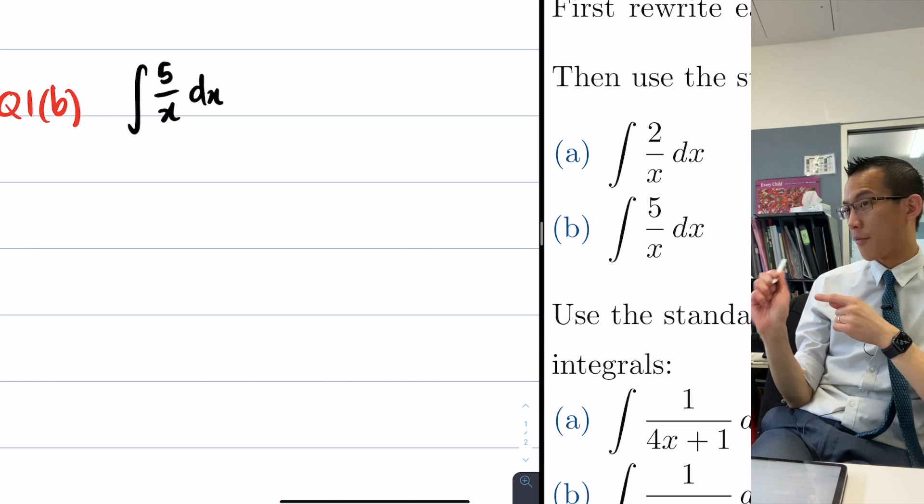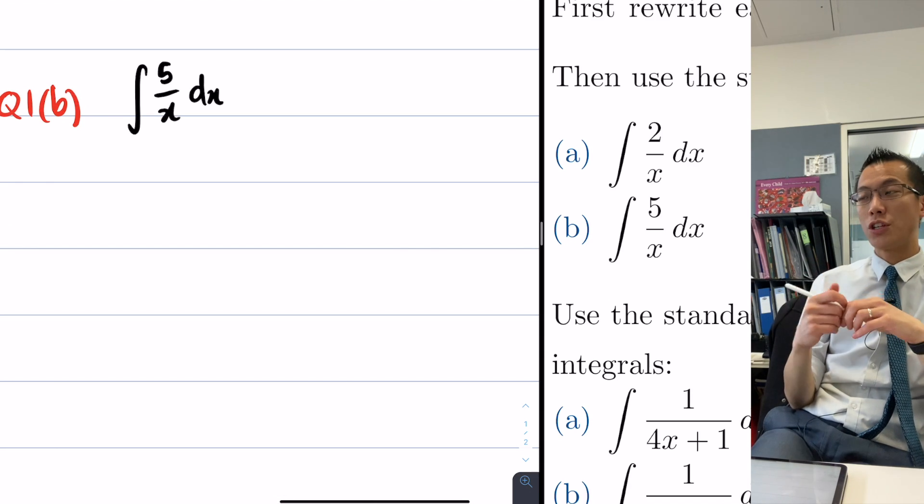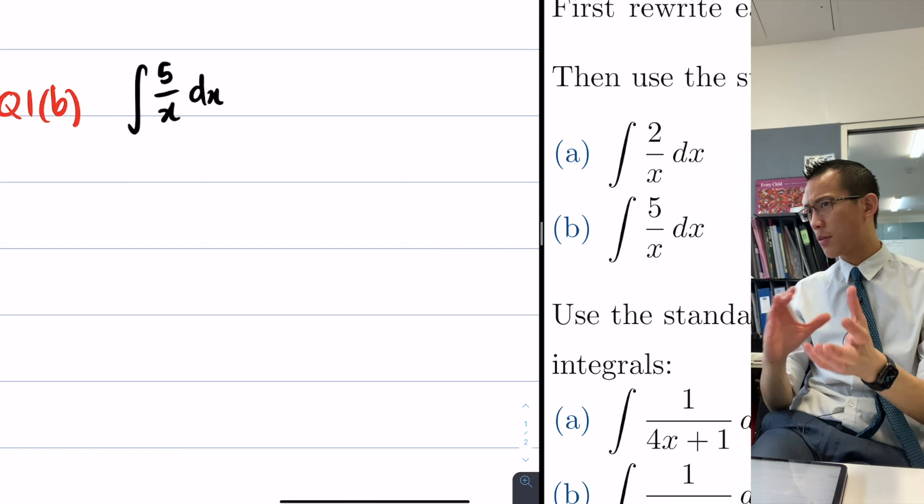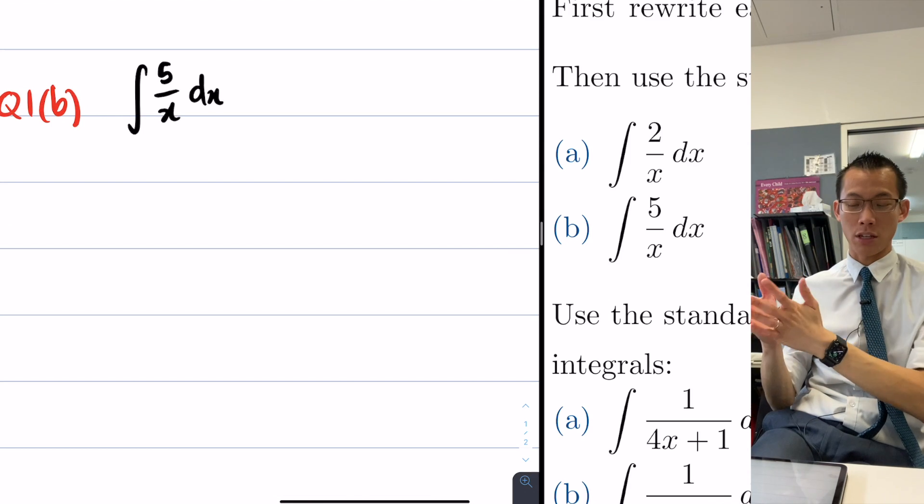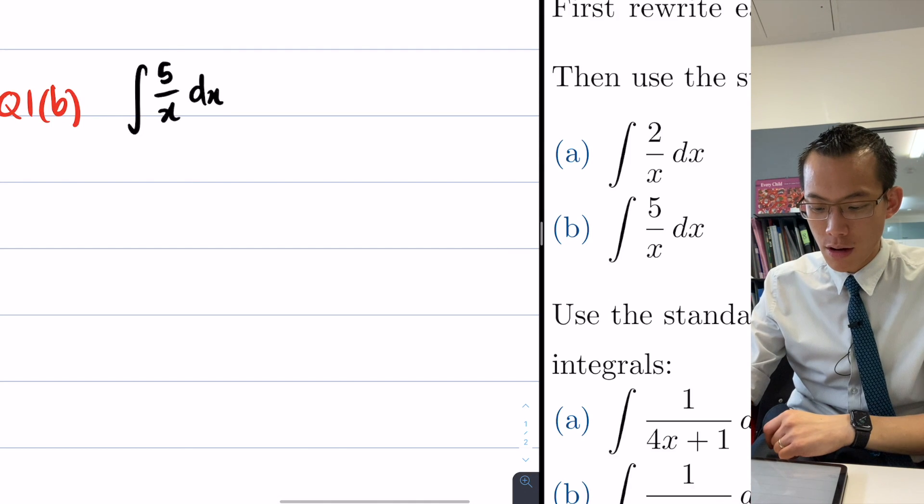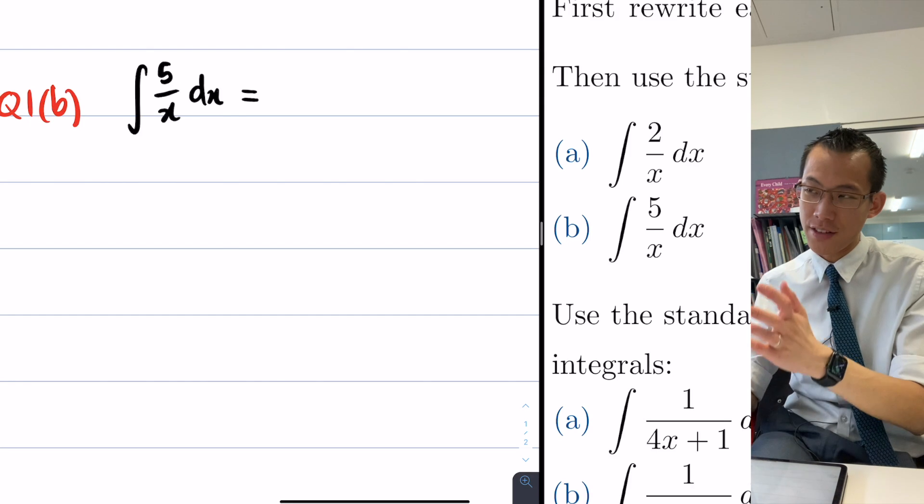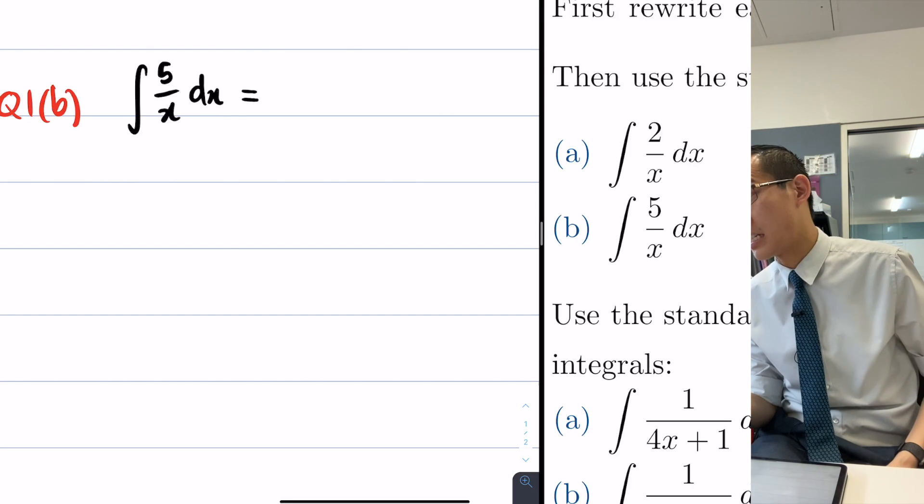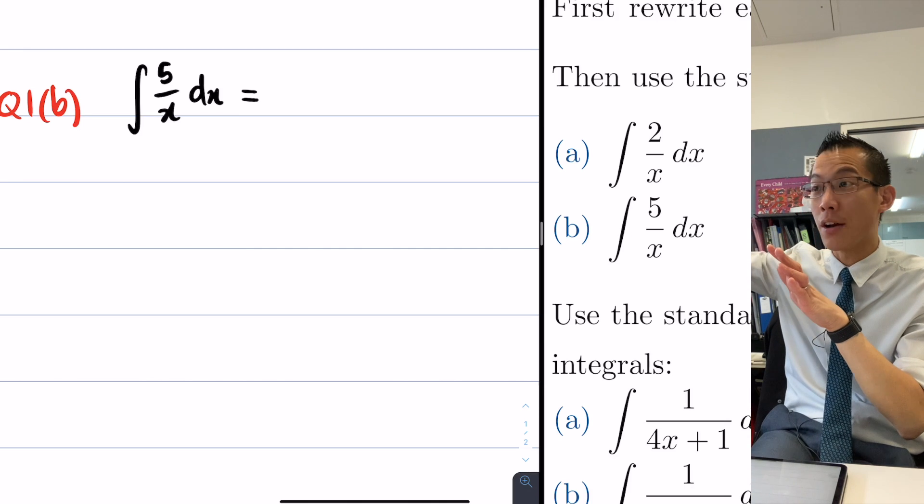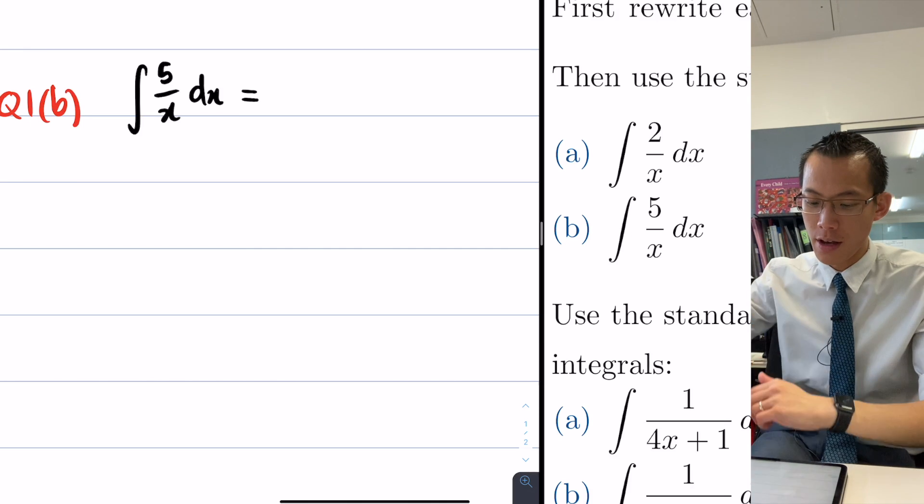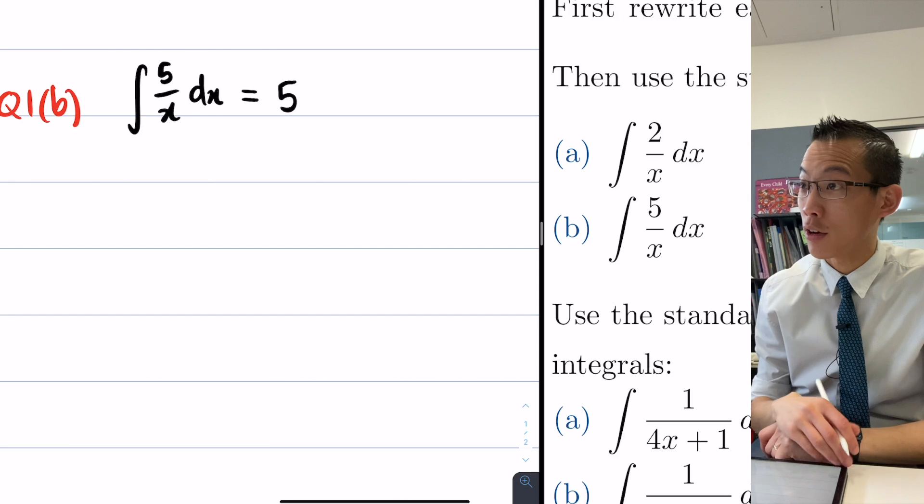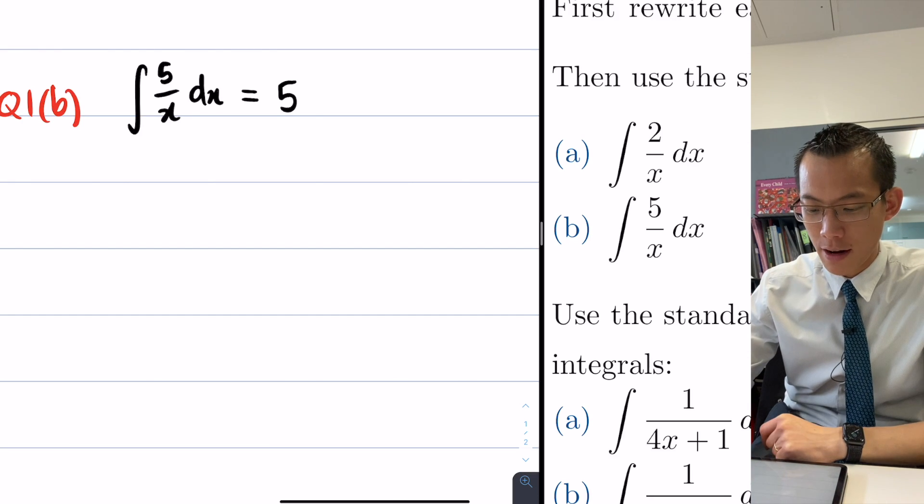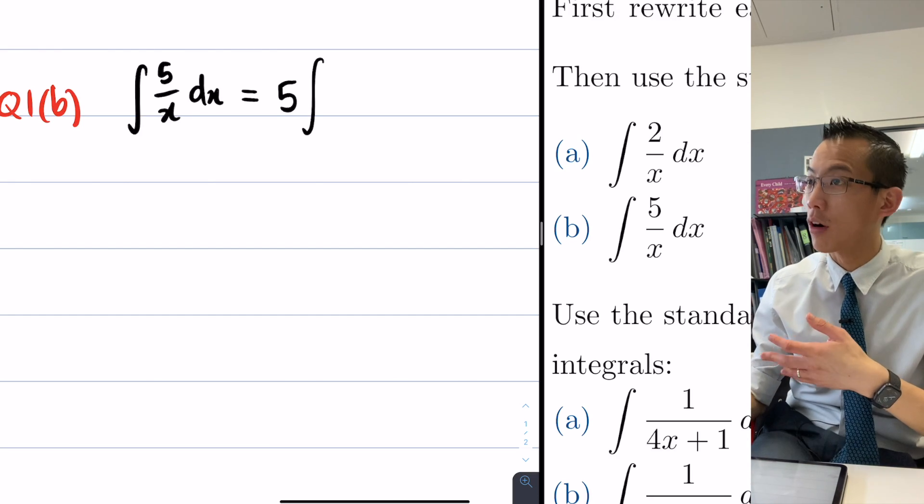When it comes to constants, like that five up the top there, we do have the ability to actually move them around quite flexibly, which is going to be really handy for us. Because that five is there and it's not really making things any easier to integrate, I'm going to factorize it out of the integral altogether. I'll pull that five out the front and then think about what I have left on the inside of the integral.